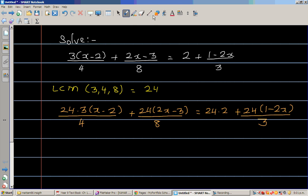So you're dividing 24 by 4. I'll do one more step for you to understand. So can I write 24 as 4 times 6? So this is 4 times 6 times 3 times x minus 2 over 4.